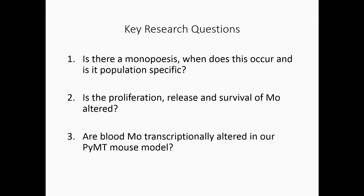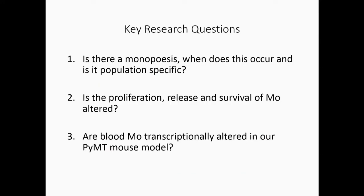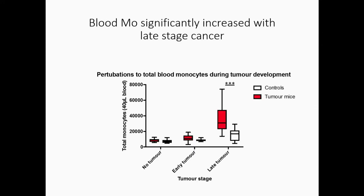So we went for this model after validating a few others and trying some allograft models. And what we wanted to check, first of all, was is there a monopoiesis? When does this occur? And is it population specific? So we did flow cytometry. We bled these mice every two weeks, tracking tumor development, and then using a quantification method using counting beads, we counted the number of monocytes in the blood. And what you see here is that there is a significant expansion of monocytes by late cancer.